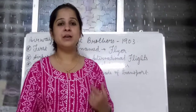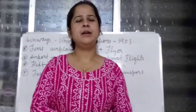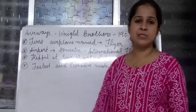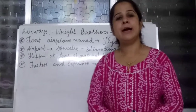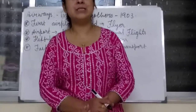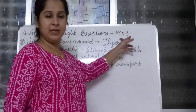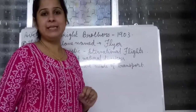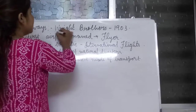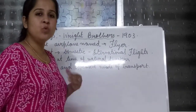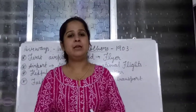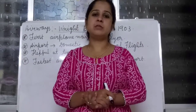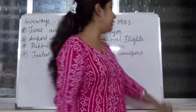Now let's talk about the third means of transport, which is very interesting. It is one of the most expensive and fastest means of transport — air transport. Airways was invented, meaning the airplane was invented in the year 1903. The first airplane was invented by Wilbur Wright and Orville Wright, known as the Wright brothers, who are famous because they invented the first airplane in the year 1903.